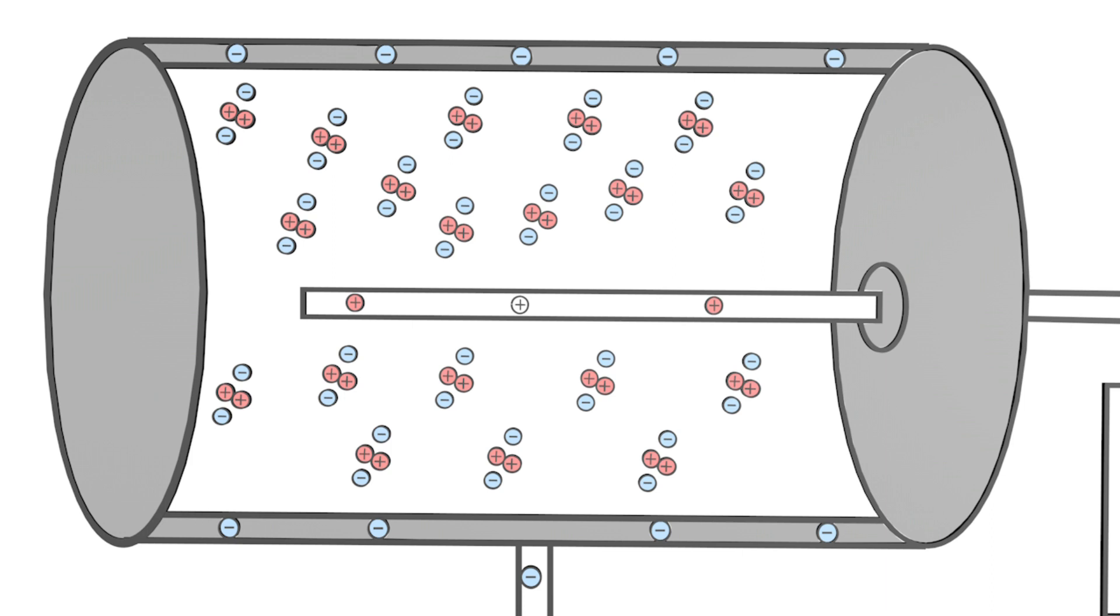Let us assume that beta-minus radiation, that is an electron, flies through the very thin window into the cylinder. This then hits a noble gas atom and knocks an electron of this atom out of the atomic shell.